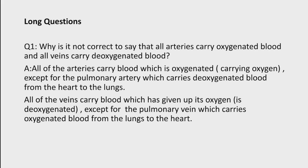Long Question No. 1: Why is it not correct to say that all arteries carry oxygenated blood and all veins carry de-oxygenated blood? Answer: All arteries carry oxygenated blood except the pulmonary artery, which carries de-oxygenated blood from the heart to the lungs. All veins carry de-oxygenated blood except the pulmonary vein, which carries oxygenated blood from the lungs to the heart.